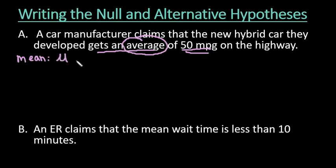In the null and alternative hypotheses, we always use the population parameters. So in this case we would use μ. We would try to change this into a statement. So they're saying that it gets an average of 50 miles per gallon, which means that they're saying that the mean is 50.